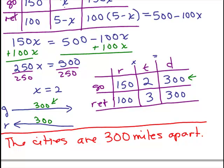The cities are 300 miles apart. Always make sure you answer the question. Don't just write X equals 2. I bet you on a multiple choice test, 2 would be one of the answers to see if somebody remembers to actually answer the right question. So this is our answer.